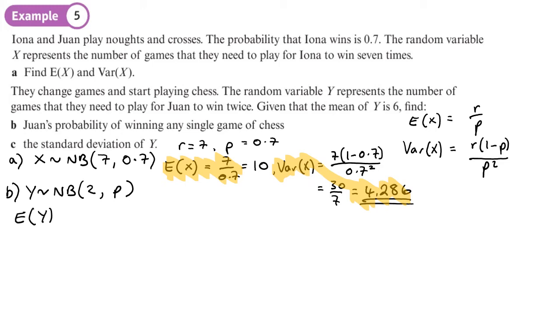That's what we're told, so then we can just substitute into the formula that r over p equals six. So p equals two over six, which is a third. If you don't get a number less than one for your probability, you know you've done something wrong.